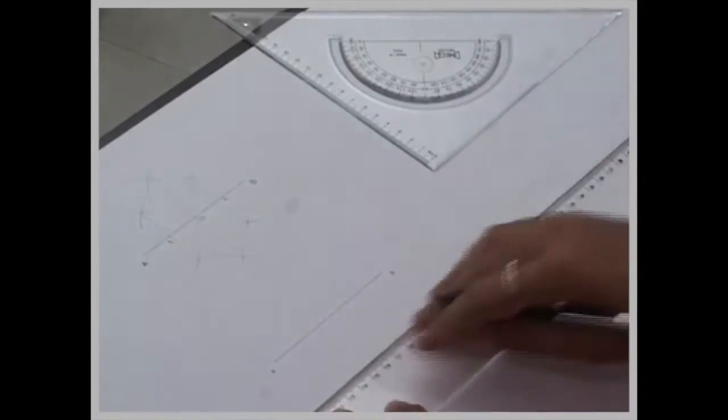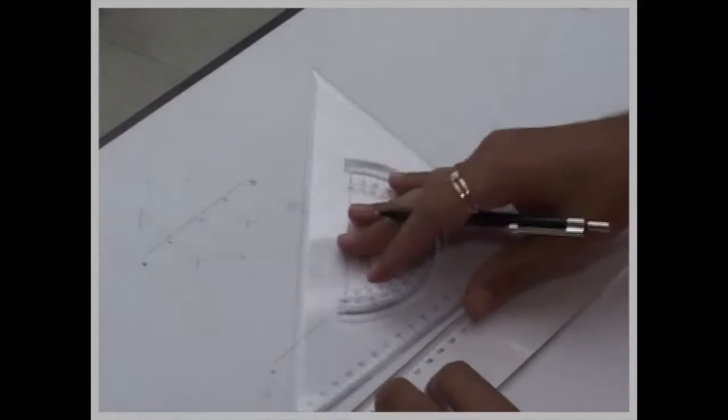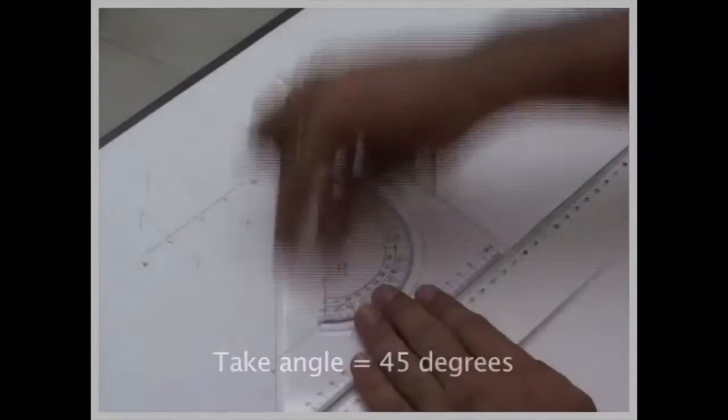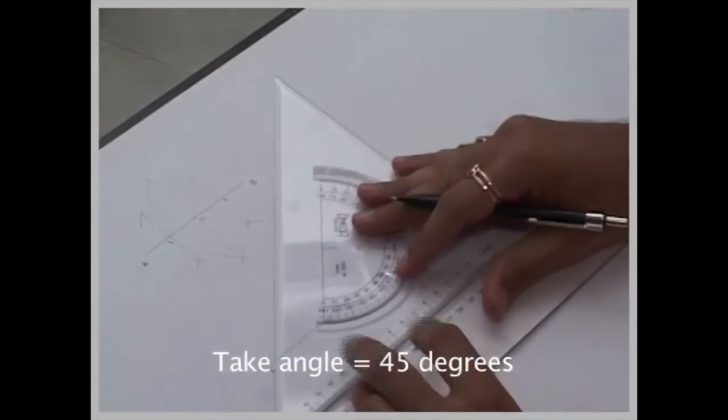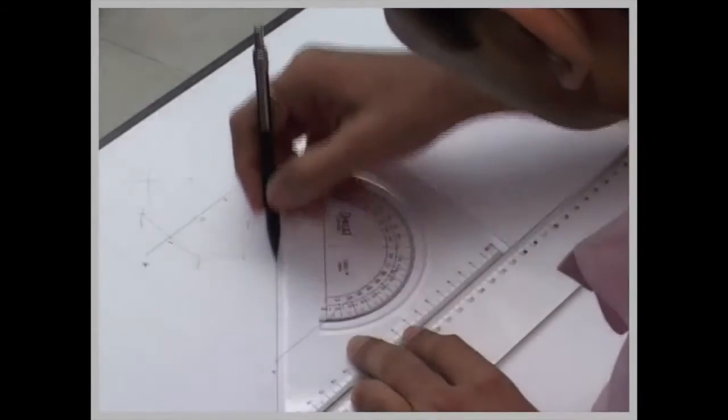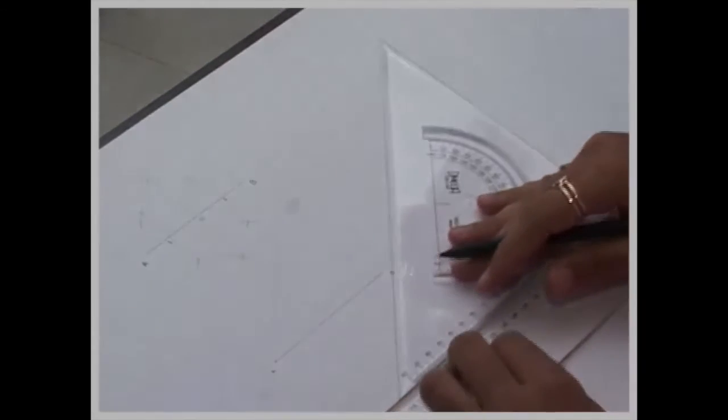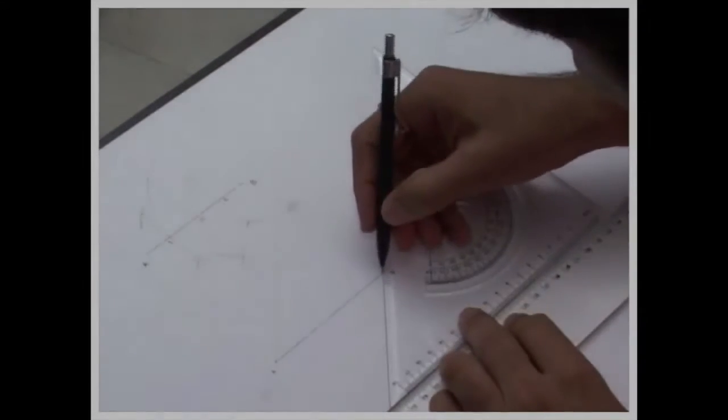And if I want to divide this line into five equal parts, then I'll take angle 45 degrees. So we can keep it this way. You can draw a line from here as well.